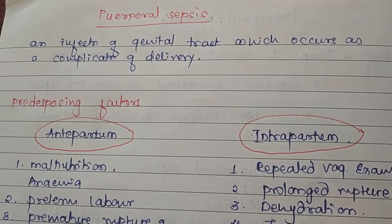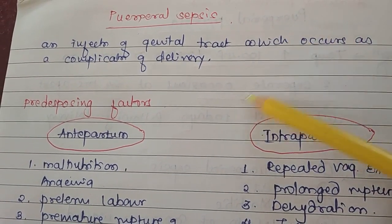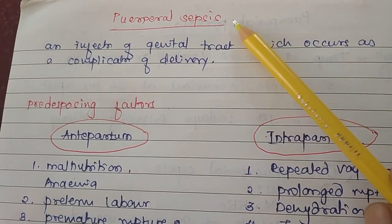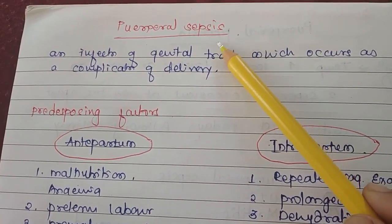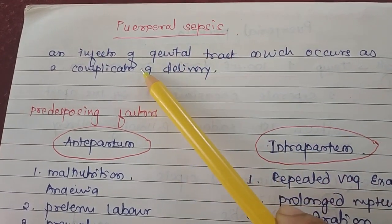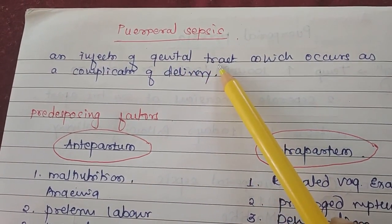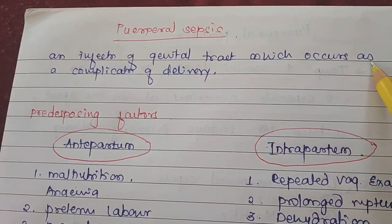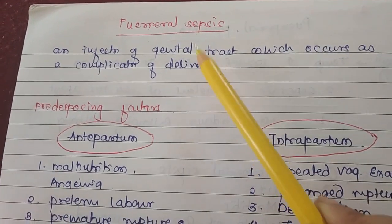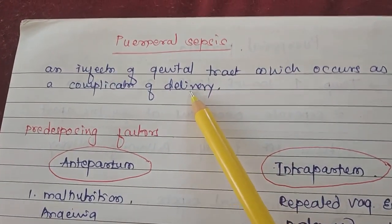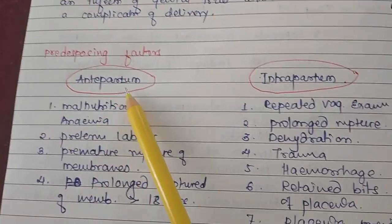From these causes of puerperal pyrexia, the most common is puerperal sepsis. Sepsis means an infection occurring in the genital tract as a complication of delivery. The predisposing factors of puerperal sepsis are divided into antepartum and intrapartum categories.